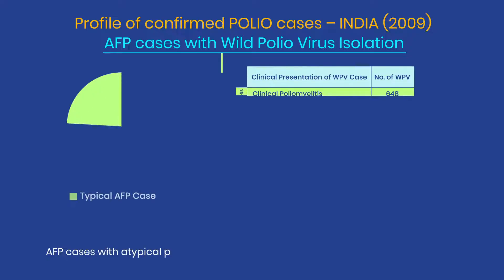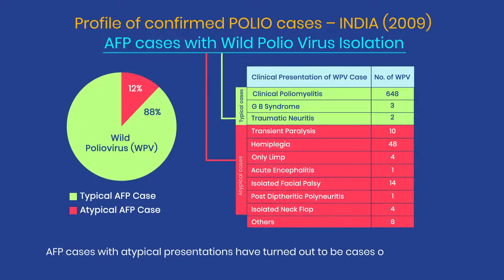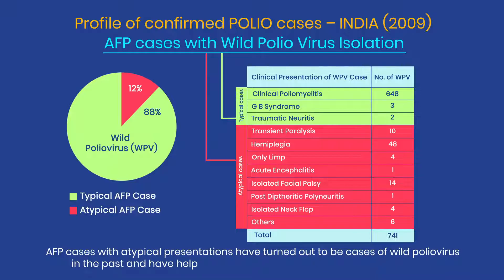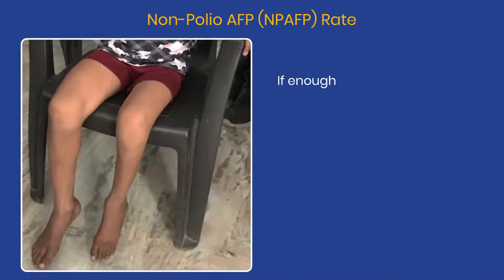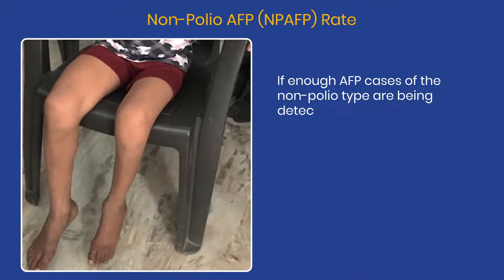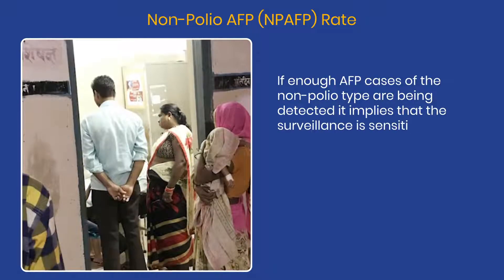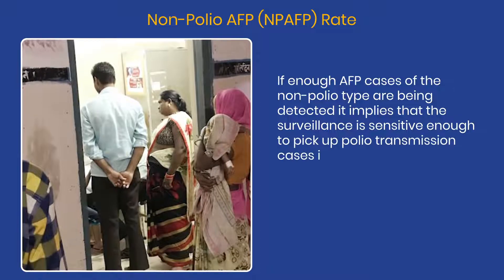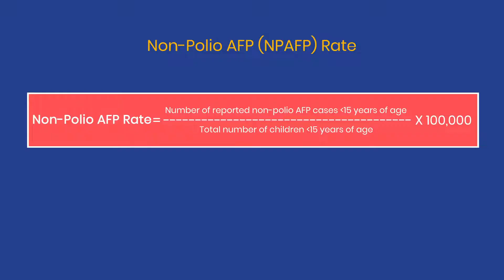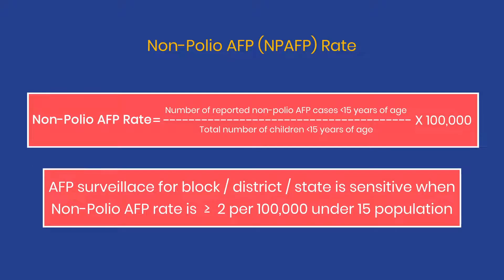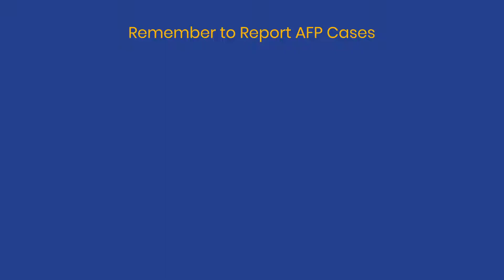AFP cases with atypical presentations have turned out to be cases of wild polio virus in the past and have helped in identification of areas of WPV transmission. If enough AFP cases of the non-polio type are being detected, it implies that the surveillance is sensitive enough to pick up polio transmission cases. The rate at which non-polio AFP cases occur is called the non-polio AFP rate. AFP surveillance is considered sensitive when the non-polio AFP rate is 2 or more per 1 lakh under-15 population.